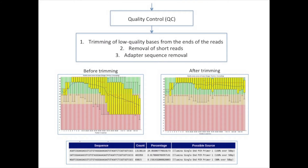The quality control step includes the removal of adapter sequences, trimming of low quality bases from the end of the reads, and further removal of short read sequences.